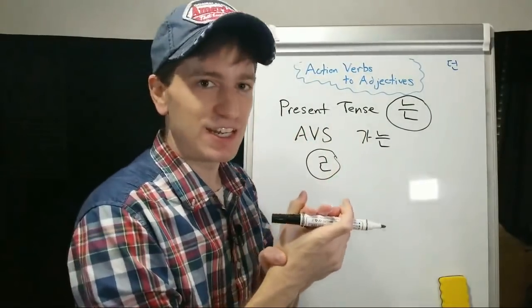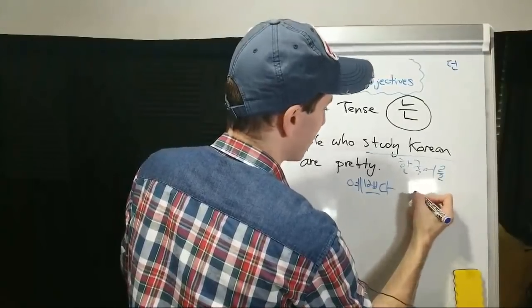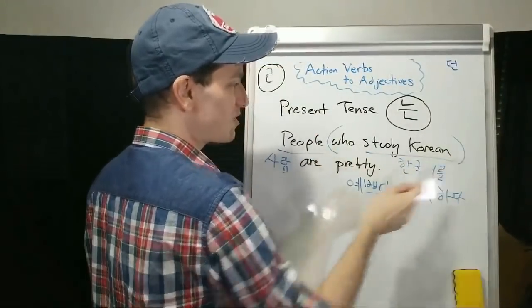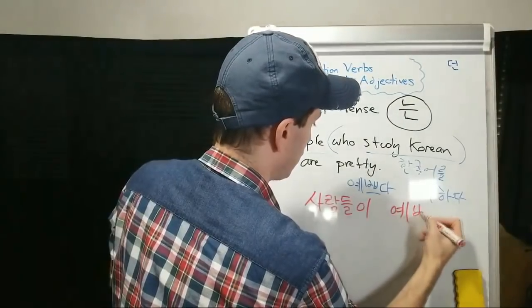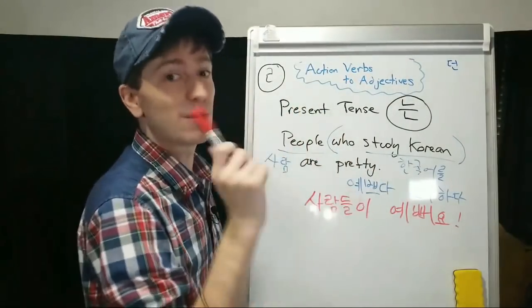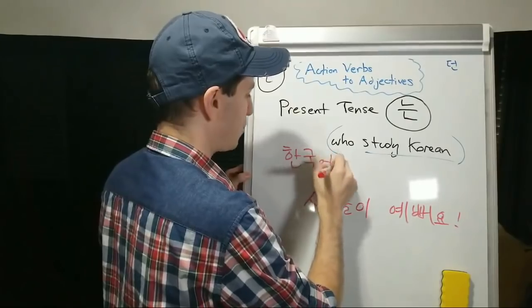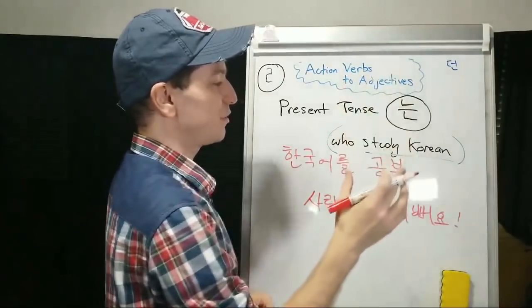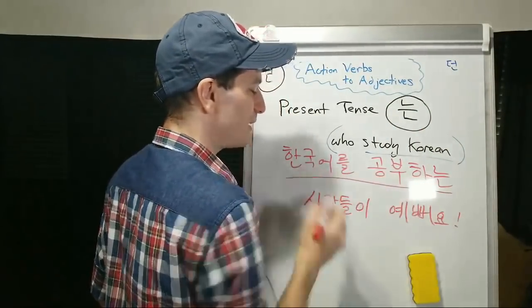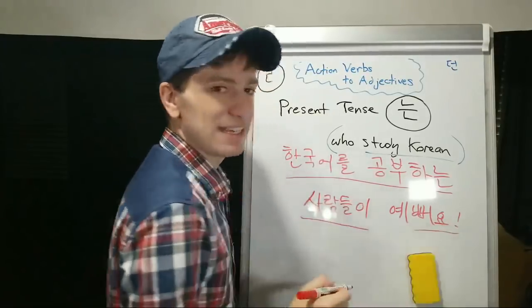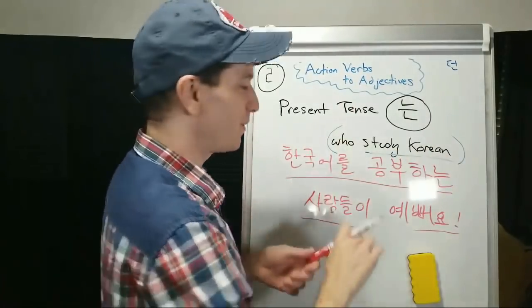Example: people who study Korean are pretty. 예쁘다 for pretty. 한국어를 공부하다 to study Korean. 사람 for people. Let's look at the rest of the sentence first: people are pretty — 사람들이 예뻐요. We want to specify what kind of people: people who study Korean. 한국어를 공부하다 — 공부하다 is an action verb, so we remove the verb stem 하다 and attach 는: 한국어를 공부하는 — who studies Korean. So: 한국어를 공부하는 사람들이 예뻐요 — people who study Korean are pretty.